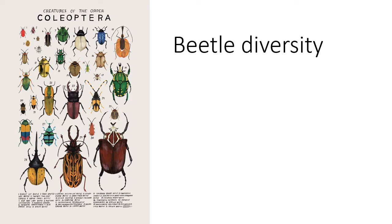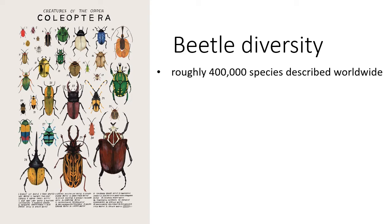Beetles are the largest group of living organisms known to science. Even with plants included in the count, one in every five known organisms is a beetle. Scientists have described over 350,000 species of beetle, with many more still undiscovered.